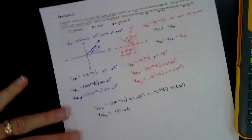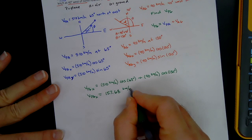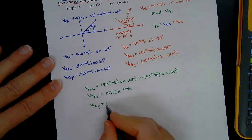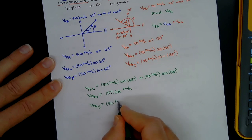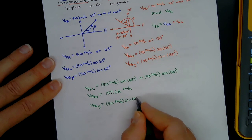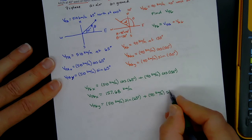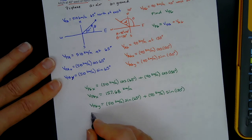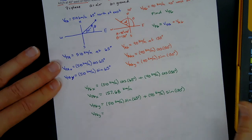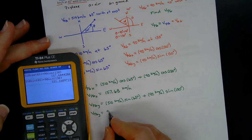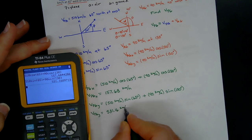The vertical component of V sub PG: V sub PGy equals 510 sine 65 degrees plus 90 sine 130 degrees. Calculating: 510 sine 65 plus 90 sine 130 gives 531.16 kilometers per hour.